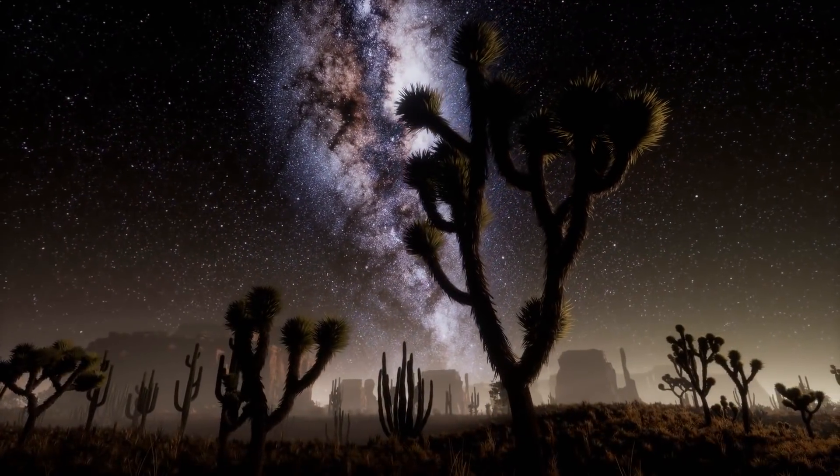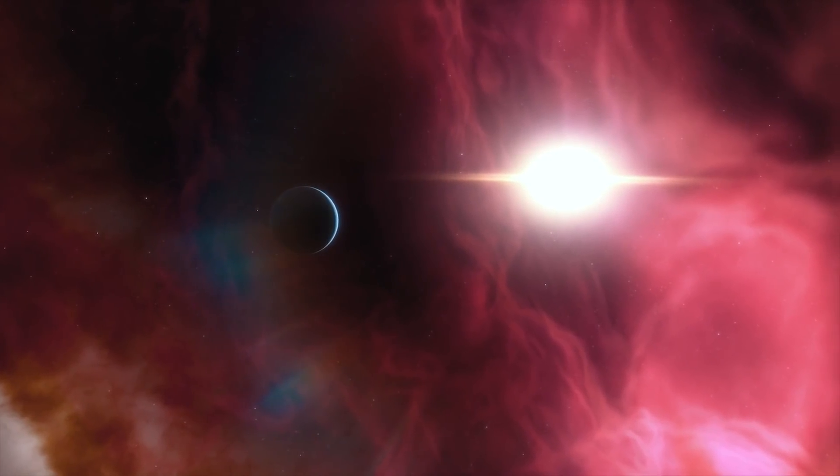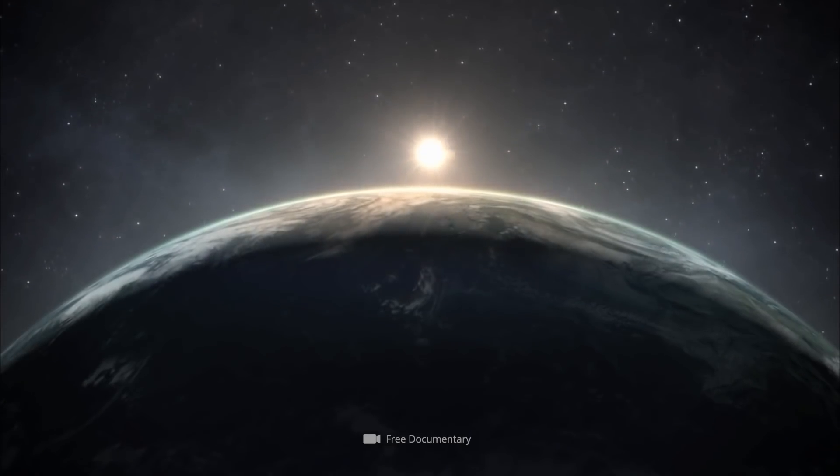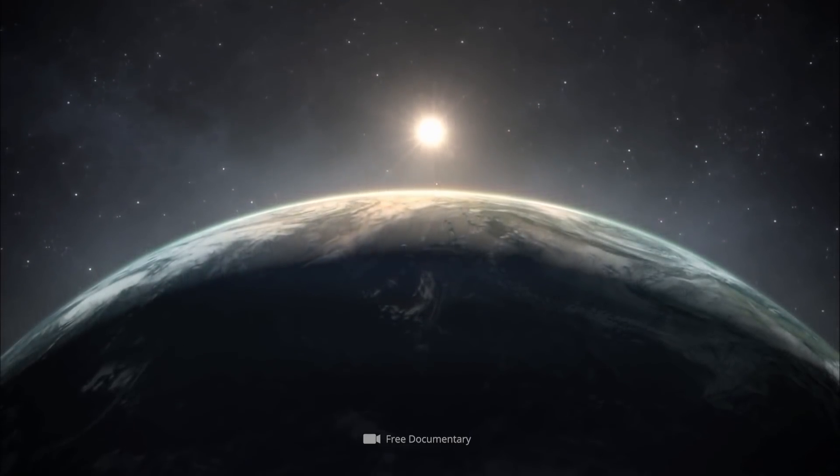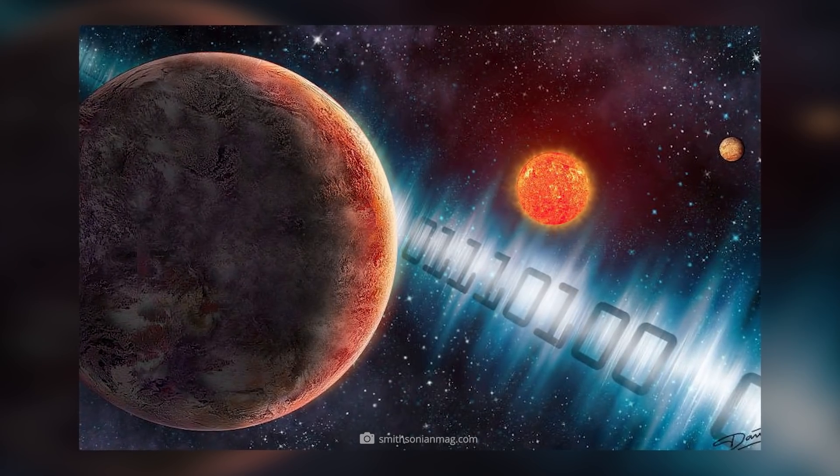At only 12.2 light-years away, Luyten b is one of the most Earth-like planets ever found, making it the fifth closest known potentially habitable exoplanet. For this reason, the SETI project staff sent a signal to it in 2017.